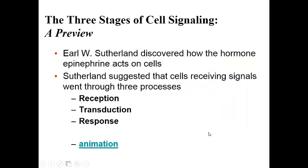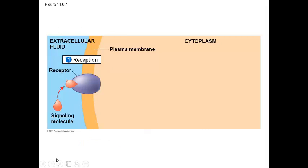There are three stages to a signal transduction pathway. Step one is reception, step two is transduction, and step three is the response. Reception is when the signaling molecule binds to a receptor on the cell membrane of the target cell. This signaling molecule can be a local regulator, a neurotransmitter, or a hormone. In either case, the ligand binds to a receptor in the cell membrane, which is an integral protein.